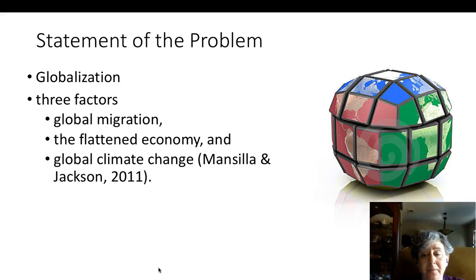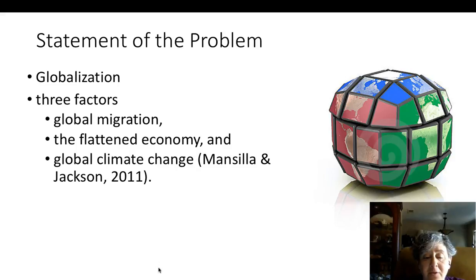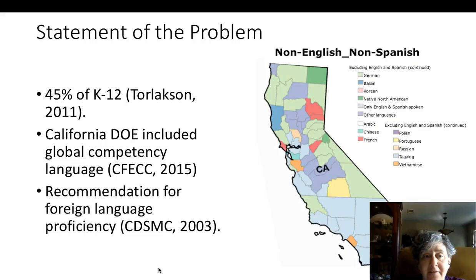Statement of the Problem. Globalization of the economy and job force has changed the factors that will affect the ability of our children, current K-12 students, to get jobs. The three most prescient factors that will influence job availability and opportunities for them are global migration, the flattened economy, and global climate change, according to Mancilla and Jackson, 2011.